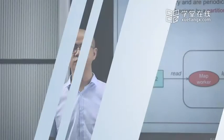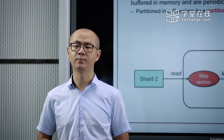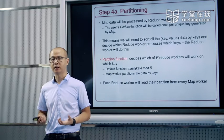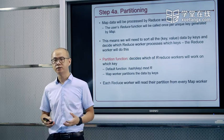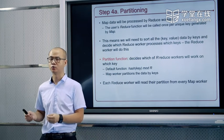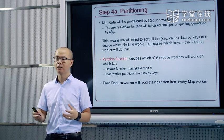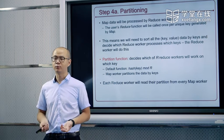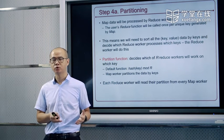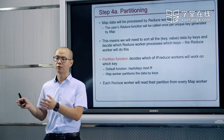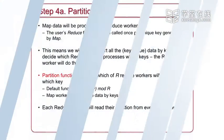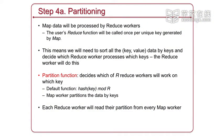中间结果最终会周期性地写到磁盘里面。在写的过程中，实际上有一定的结构，这个结构由一个叫做partition的过程来决定，也就是把所有产生的中间key和中间value按照一定规律写到不同的partition里面。partition的数量和方式实际上与我们产生的reducer的情况相匹配。前一步我们得到了一系列中间结果，具有k和value的属性，被分成了r个区域。